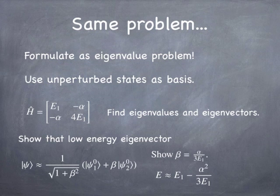The energy of the low energy eigenvector is E₁ minus alpha squared over 3E₁. When you get eigenvectors, you're going to get two eigenvectors and two eigenvalues. We're really only interested in the new ground state, so we want to look at the low energy eigenvector and eigenvalue. The first excited state also gets shifted, but it gets shifted up by the perturbation. Right now, I just want you to focus on what happens to the ground state.